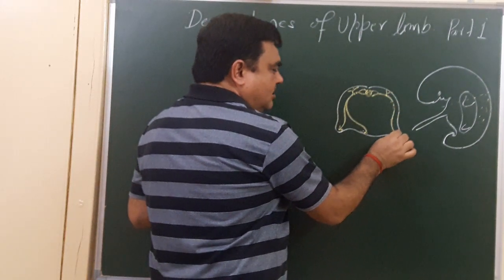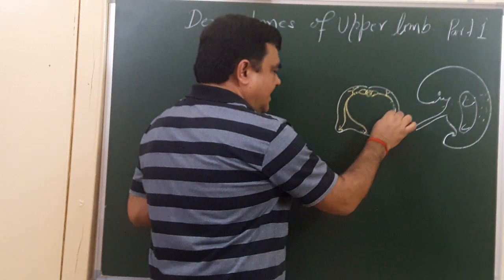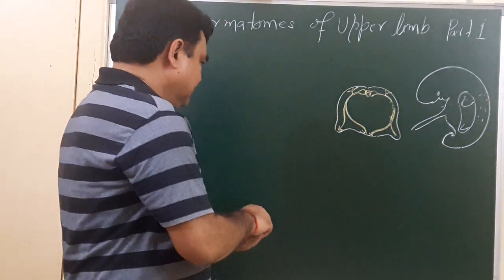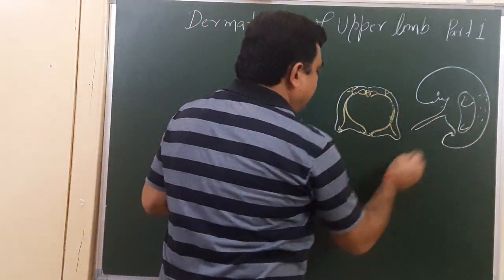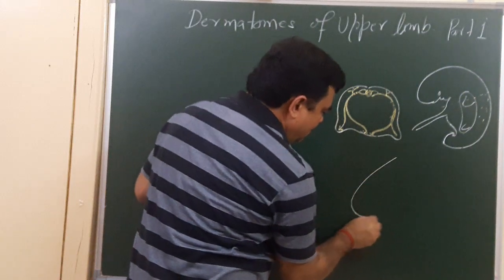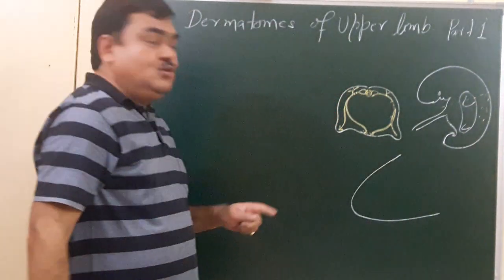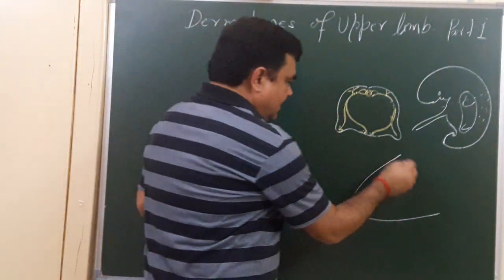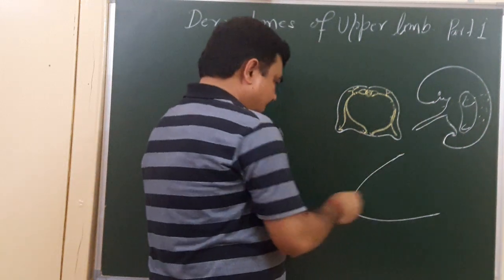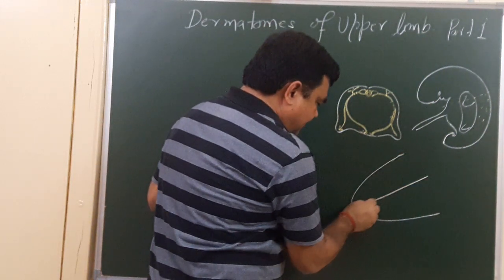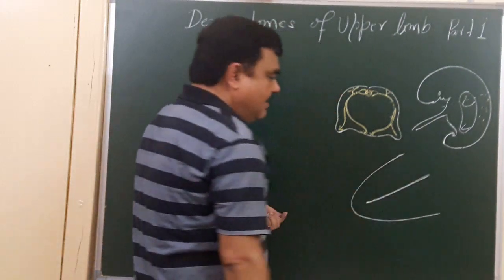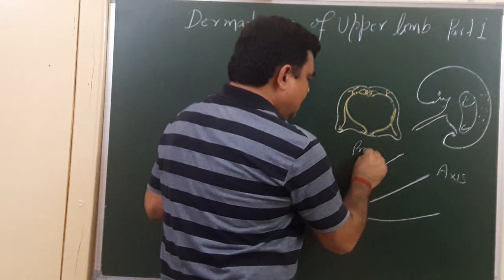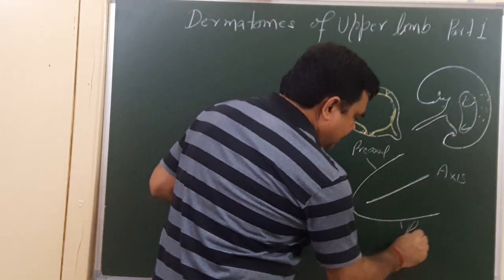The ventral ramus gives a lateral branch to the limb, and here is the ventral branch. This limb bud grows like this. As you know, the body develops in the form of segments. This is the axis of the developing limb bud — this is the pre-axial border and this is the post-axial border.